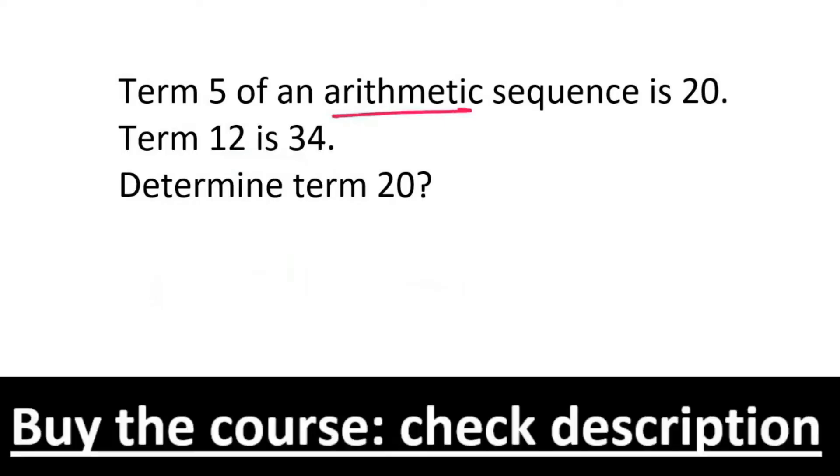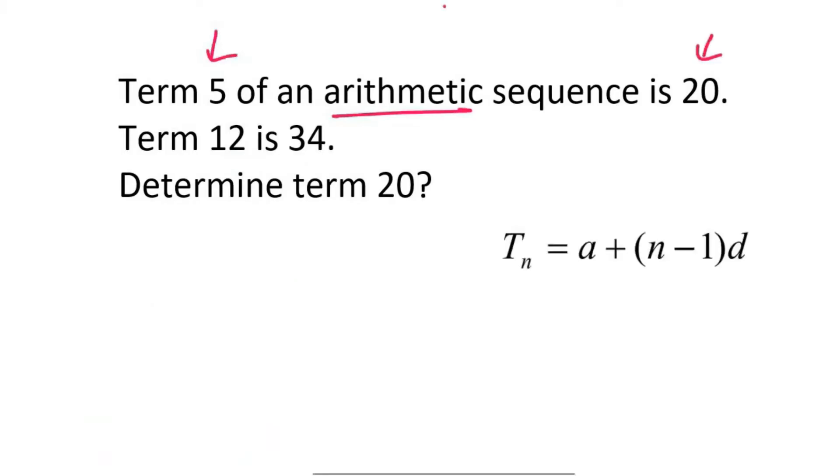They're telling you it's arithmetic, and they're telling you that term 5 is 20. So I'm going to fill in as much as I can. Term 5 is 20, so I say 20 equals a, which I don't know. n is 5, because that's the term number or the position number. And then the common difference, I don't know. So then that just becomes a plus 4d. Now, I can't do anything more with that.